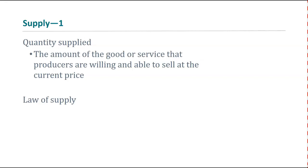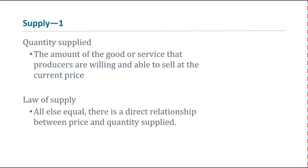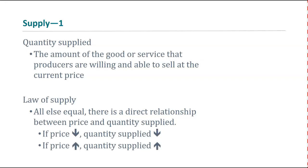What we would see across all of your tables is the law of supply. All else equal, there's a direct relationship between price and quantity supplied. If price goes down, quantity supplied goes down; if price goes up, quantity supplied goes up. Think about it from the supplier's perspective: if you can only get $0.05 per Snickers bar, you're not going to work hard to sell a bunch of them. But if you could get $5 per bar, you'd do what it takes to get as many out there as possible.